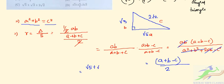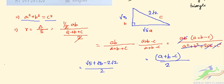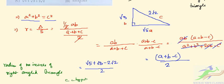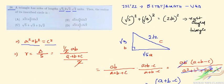So our final correct option is option D. This will be the radius of the incircle of the right angle triangle where c is the hypotenuse. So the correct option is option D, that is root 5 plus root 3 minus 2 root 2 by 2.